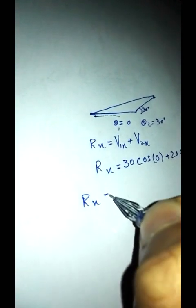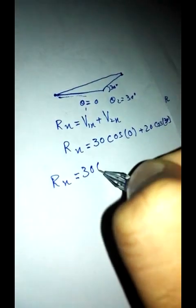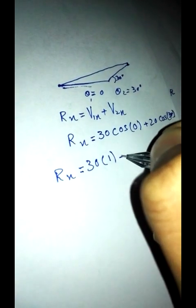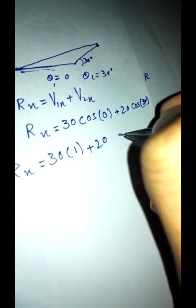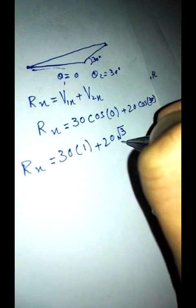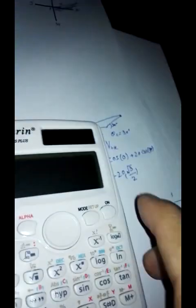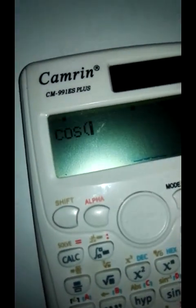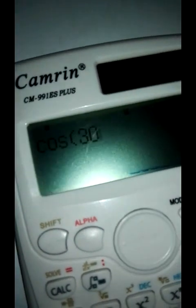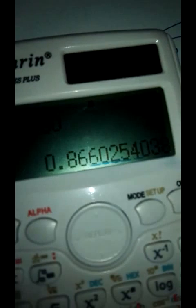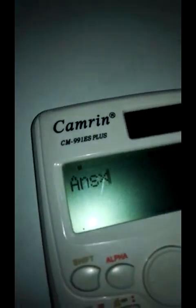This equals root 3 divided by 2. Cos of 30 equals root 3 by 2, which is in turn equal to 0.86. So the answer is 17.32.